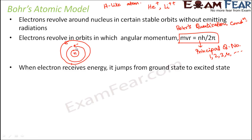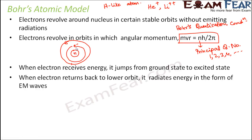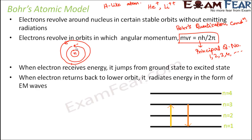Just like climbing a mountain requires energy, an electron also needs externally provided energy to jump from the ground state to the excited state. In the excited state, the electron is not stable, so it stays there only momentarily and then falls back. When the electron returns from a higher energy level to a lower energy level, it releases energy in the form of electromagnetic waves. So going up requires energy intake, and falling back releases energy.